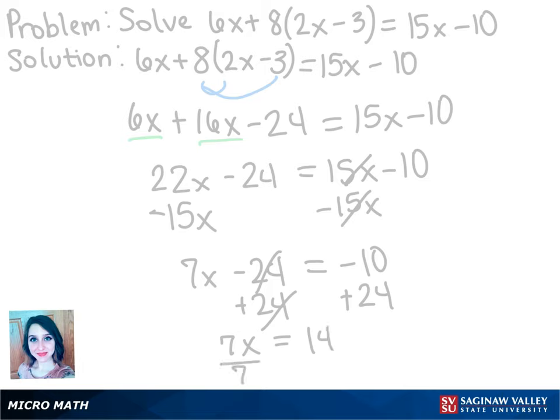Now we want to get rid of that coefficient 7, so we're going to divide both sides by 7. And then we get x equals 2, which is the solution.